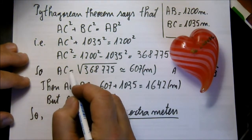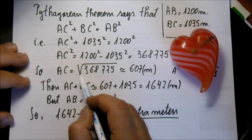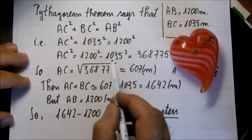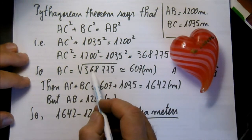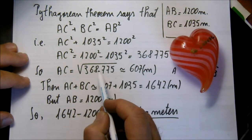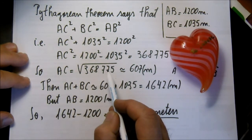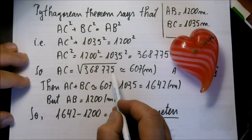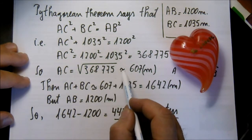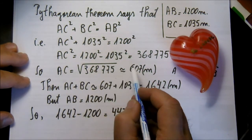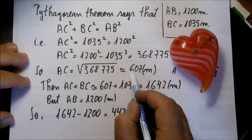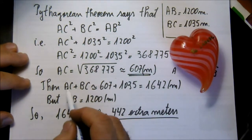So AC equals the square root of 368,775, which equals 607 meters.